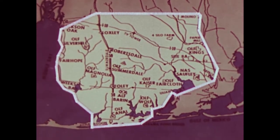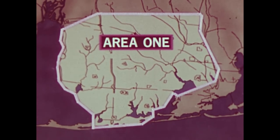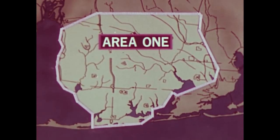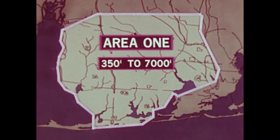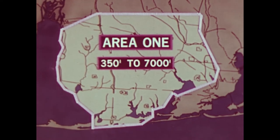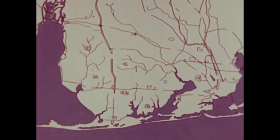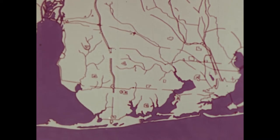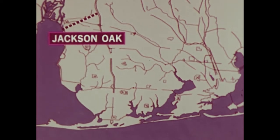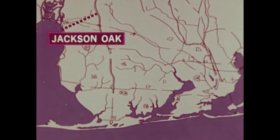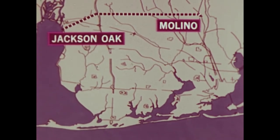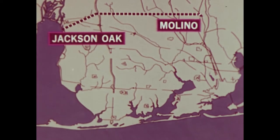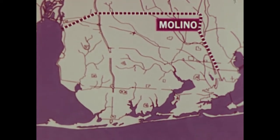Training Air Wing 7 is assigned Area 1 within the A-292 caution zone. Generally, this area may be used from 350 to 7,000 feet for primary flight training. The northern boundary is the southern edge of the Victor 198 airway — an imaginary line from the town of Jackson Oak, Alabama to a point on Alabama Route 59, two miles north of Interstate 10, then direct to the town of Molino, Florida. The eastern boundary goes south from Molino to an intersection with Interstate 10.